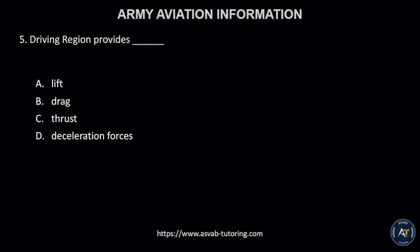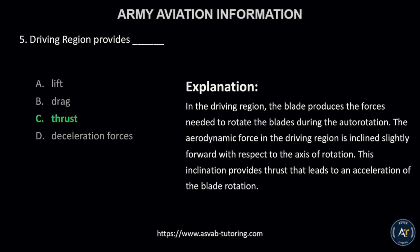Number 5. Driving region provides A, lift; B, drag; C, thrust; or D, deceleration forces? The correct answer is letter C, thrust. In the driving region, the blade produces the forces needed to rotate the blades during autorotation. The aerodynamic force in the driving region is inclined slightly forward with respect to the axis of rotation. This inclination provides thrust that leads to an acceleration of the blade rotation.